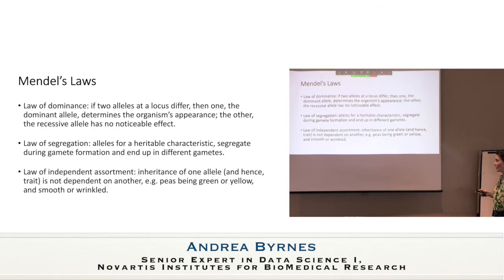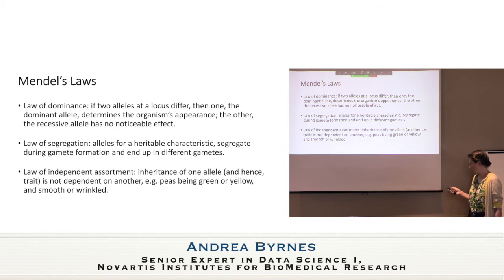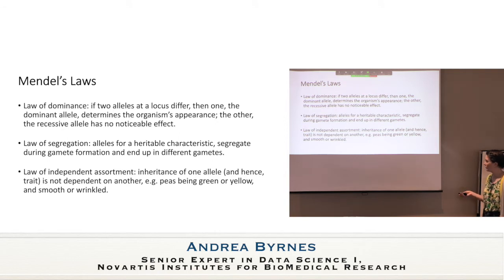Mendel introduced several laws. The law of dominance: if two alleles at a locus differ, the dominant allele determines the organism's appearance and the recessive allele has no noticeable effect — though we know this isn't true for many traits. The law of segregation: alleles for a heritable characteristic segregate during gamete formation and end up in different gametes — this part is meiosis. The law of independent assortment: inheritance of one allele is not dependent on the other. This is where LD muddies things, because things spatially located quite close together do not assort independently.